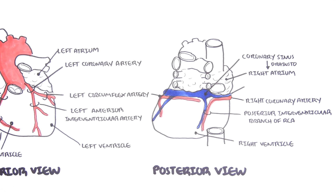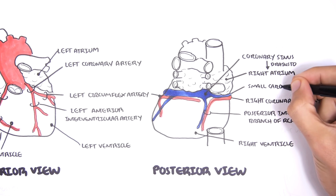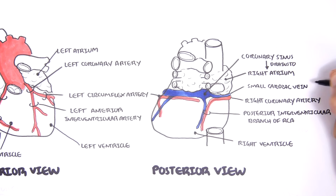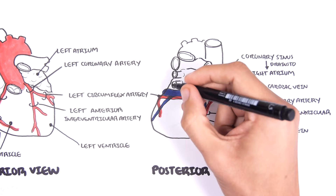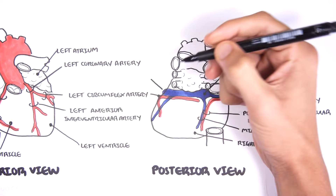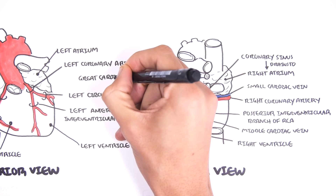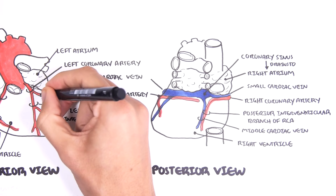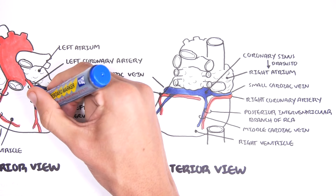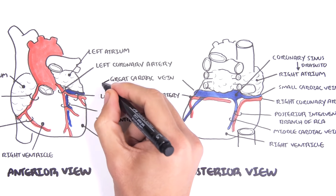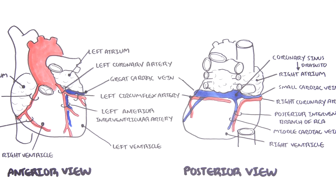The coronary veins are not very important to remember but it's easy. The small cardiac vein is on the right side, then you have the middle cardiac vein and the great cardiac vein which actually wraps around to the left anterior part of the heart. There's also a small branch called the posterior vein.